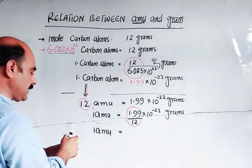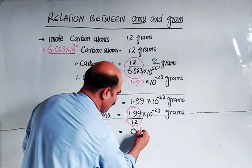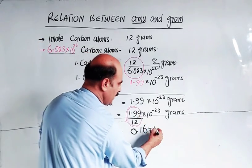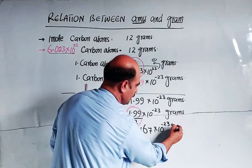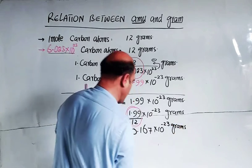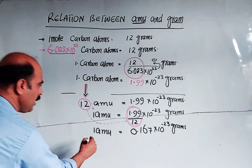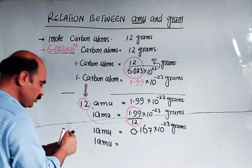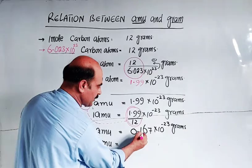That is 0.167 × 10^-23 grams. Now we need to adjust the decimal. When we move the decimal one place, we get 1.67 × 10^-24 grams.